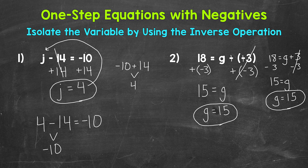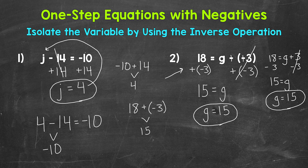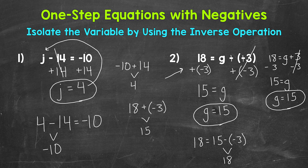I want to mention one more time that we can always come to the side to show work or set up a problem differently. For example, let's do 18 plus negative 3 horizontally: 18 plus negative 3 equals 15. Let's check that solution of 15 by plugging 15 in for G in the original equation to see if this works. So we have 18 equals 15 minus negative 3. Since we are subtracting a negative, we are increasing in value — 15 minus negative 3 does equal 18. We can also add the opposite: 15 plus positive 3 gives us 18 as well. We have the correct solution. G equals 15.